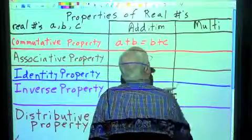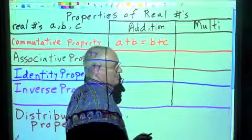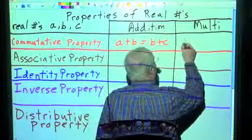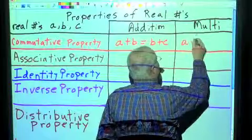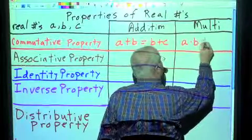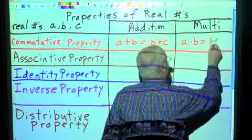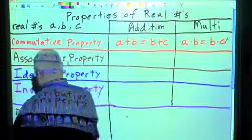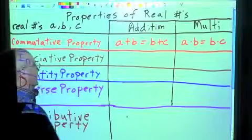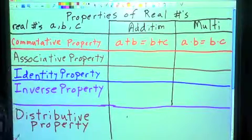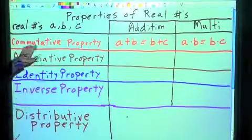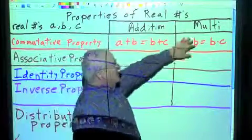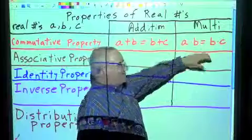The same thing with multiplication — we can change the order. A times B is the same as B times A, and we're going to get the same answer. Commutative property of addition and multiplication: we can change the order of those things.